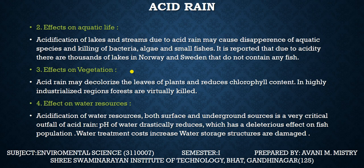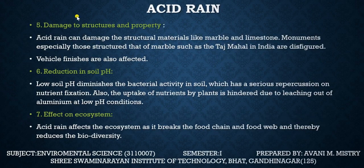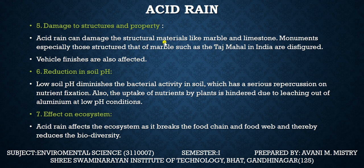Effect on water resources: acidification of water resources — both surface and underground sources — is very critical due to acid rain. The pH of water drastically reduces, which has a deleterious effect on the fish population. Water treatment costs increase, and water storage structures are damaged because acidic water affects iron structures and causes damage.